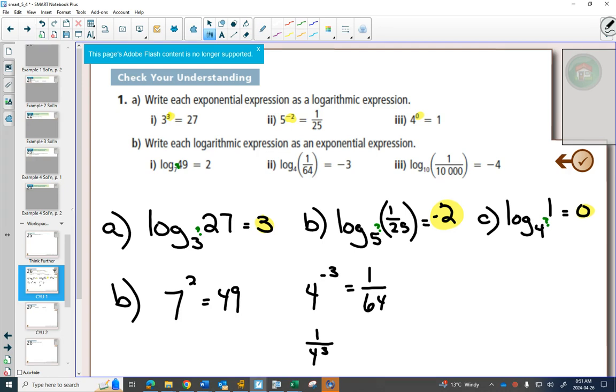And the last one, the base is 10, the exponent is negative 4. How do we get 1 over 10,000?